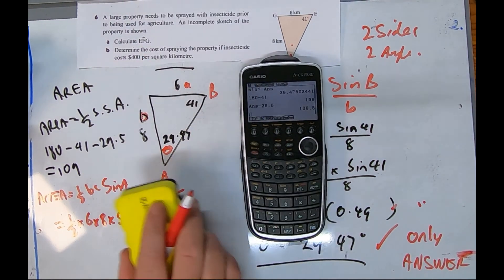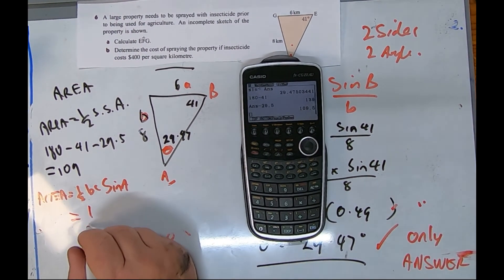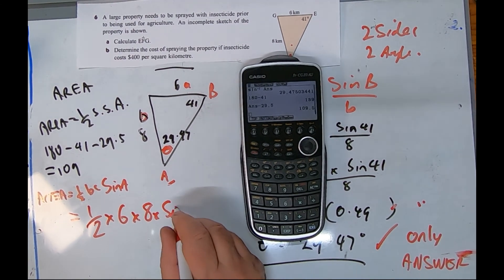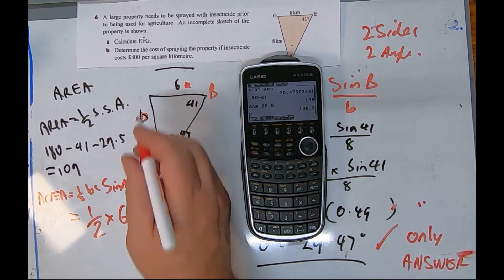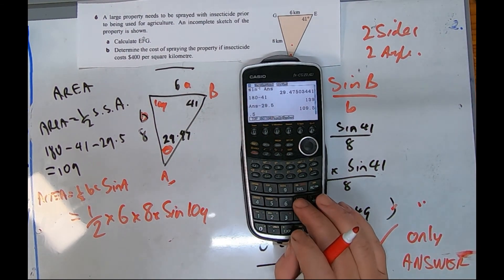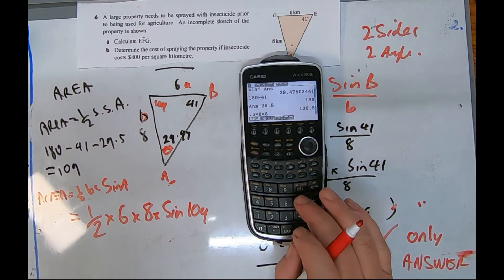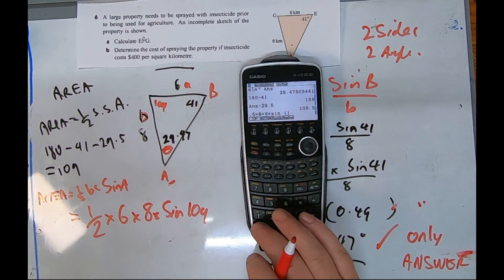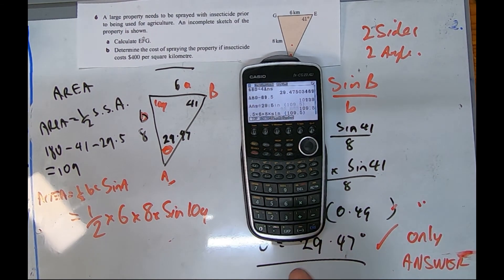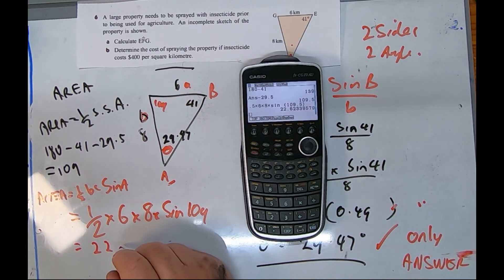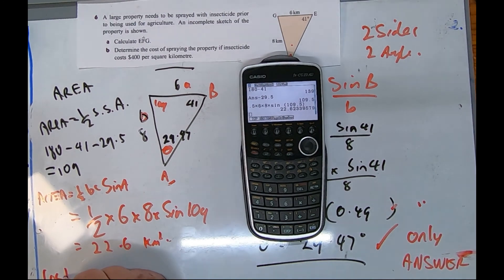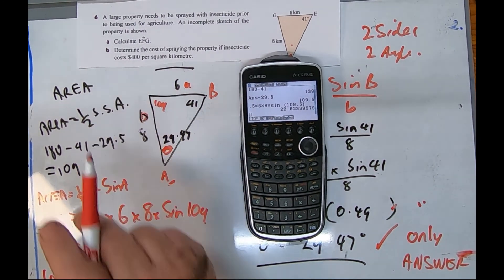Area equals one half times by six times by eight times by sine 109. It's one half times by six times by eight times by sine bracket 109.5. Equals 22.6 kilometers squared.